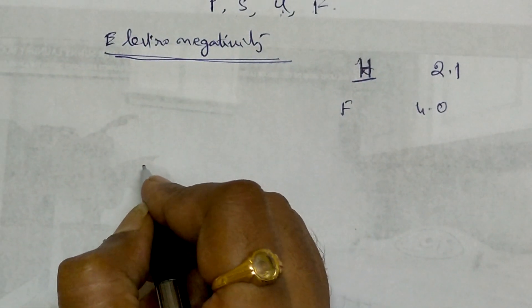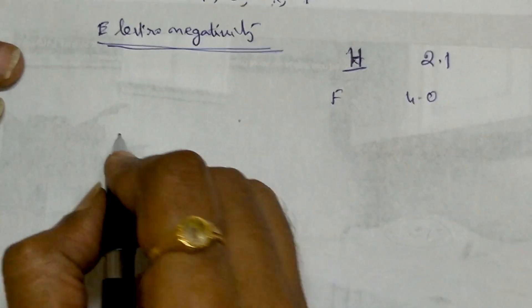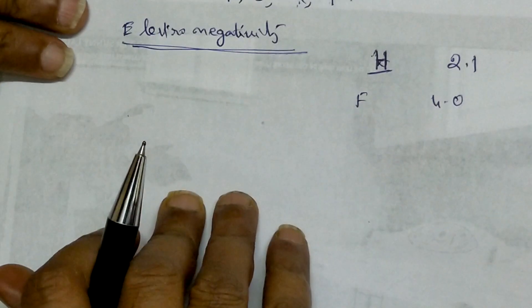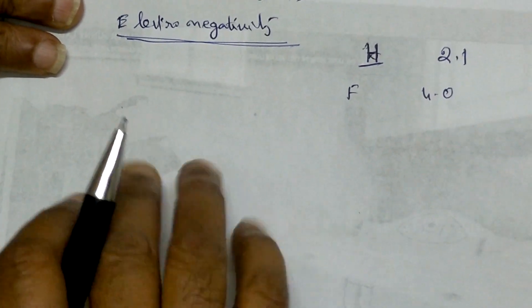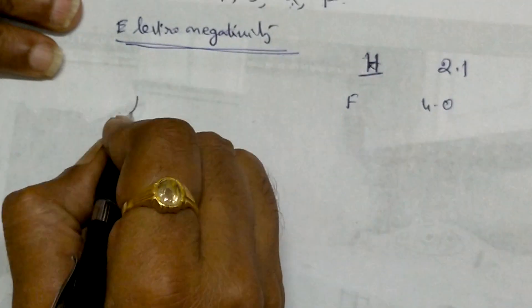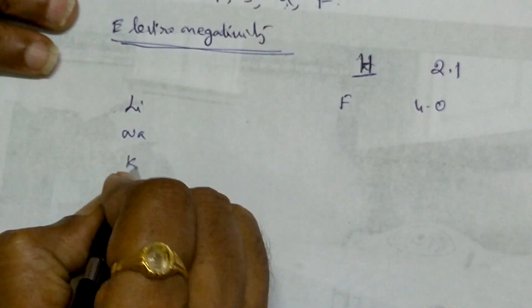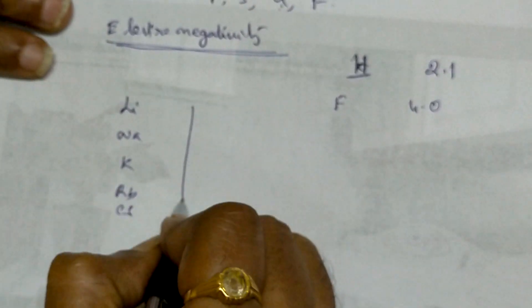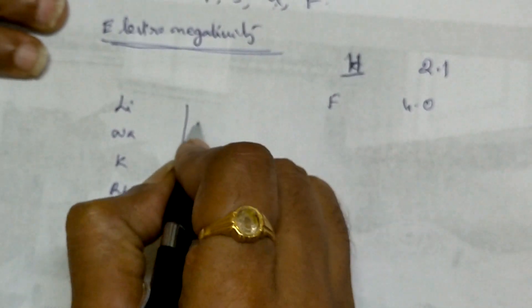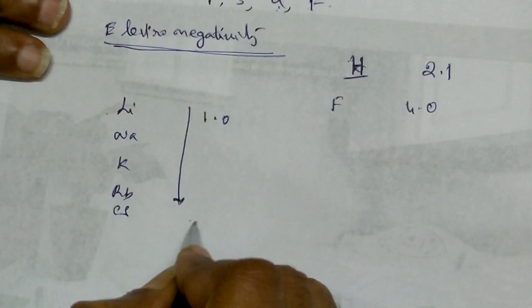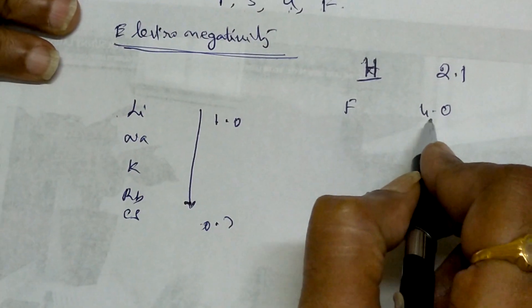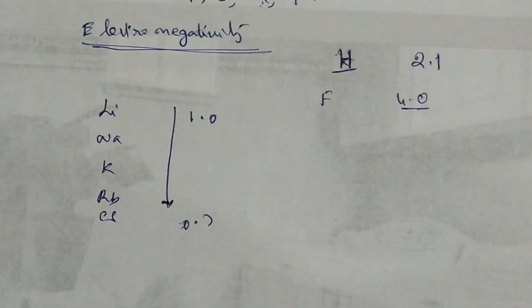If you see again, the same trend will follow: from the period from left to right, the electronegativity will increase — we are not going to touch the zero group. In a group, from lithium, sodium, potassium, rubidium, cesium, the values will come down. Electronegativity values go from 1 down to 0.7 going down the group. Similarly from lithium to fluorine it will go up to 4. So the trend is the same as the electronegativity trend.